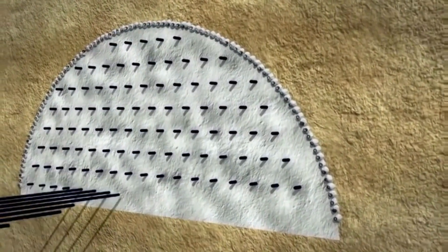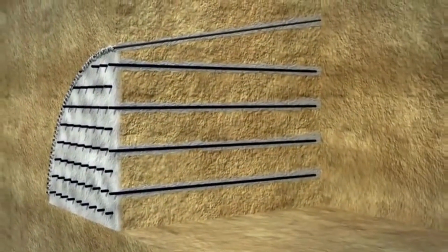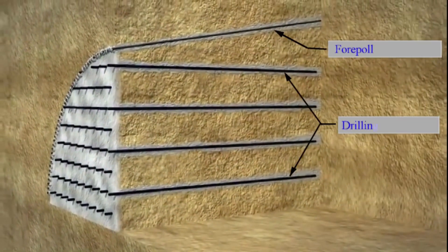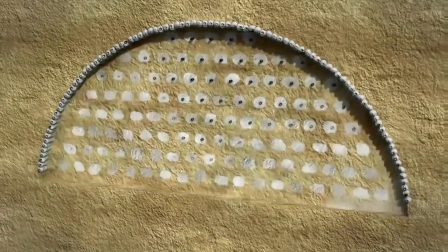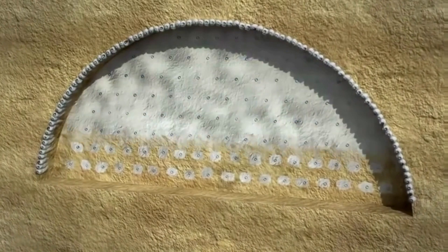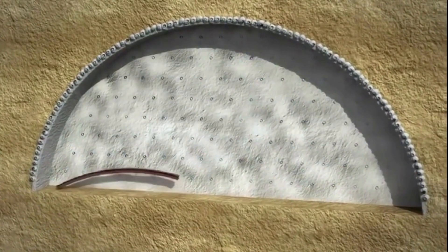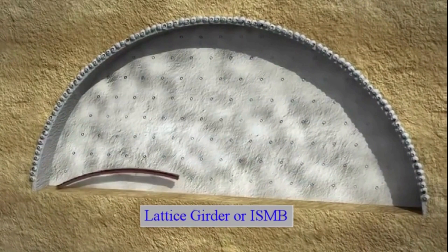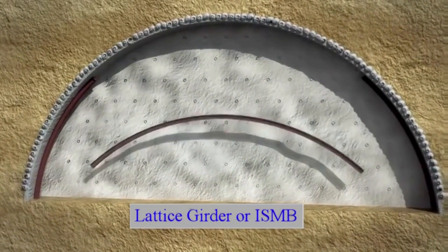Next, excavation is carried out to create the tunnel void. This can be done using various methods, including the traditional drilling and blasting technique, or through modern tunnel boring machines. These gigantic machines can carve through miles of rock and soil, while simultaneously installing concrete segments to support the tunnel walls.